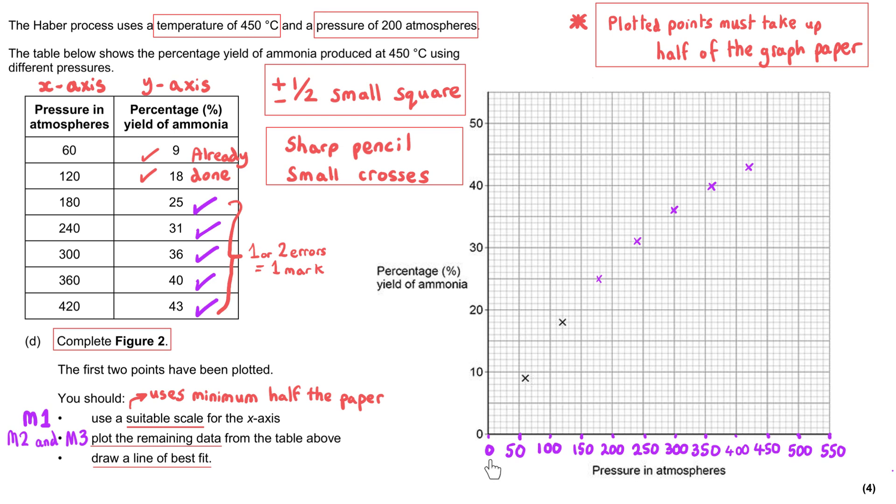Sometimes it's really important to plot the zero zero mark here, but we haven't been given it, so you should ignore that on this occasion. Just be on the lookout if at the top of the graph they were saying zero atmospheres was zero percent yield. We've not been told to plot that point, so there wouldn't be a mark for it, so let's not worry about it.